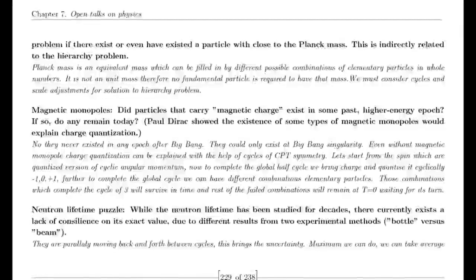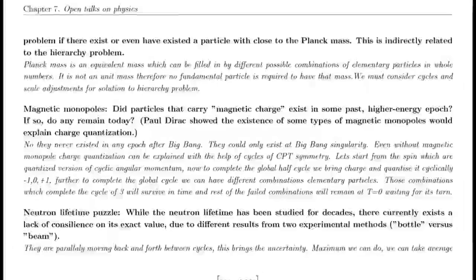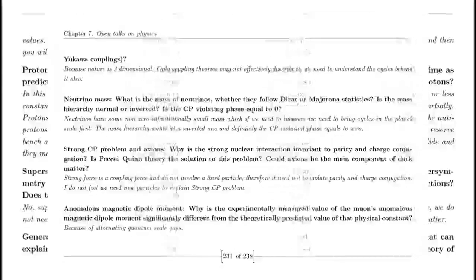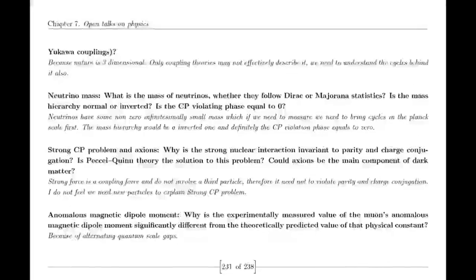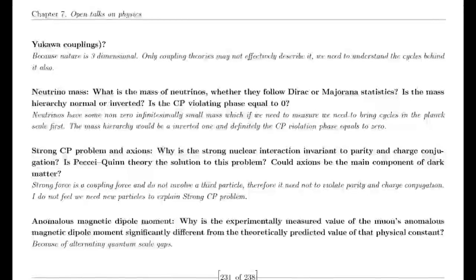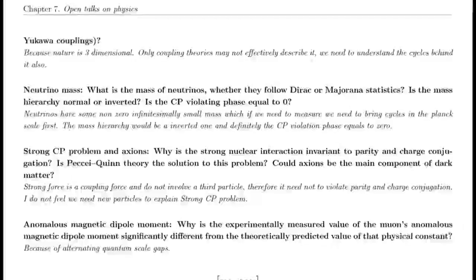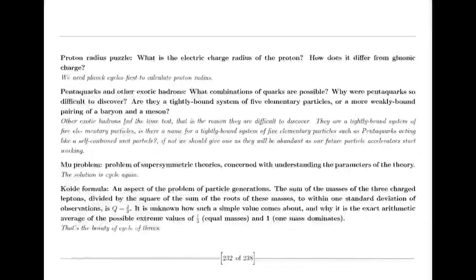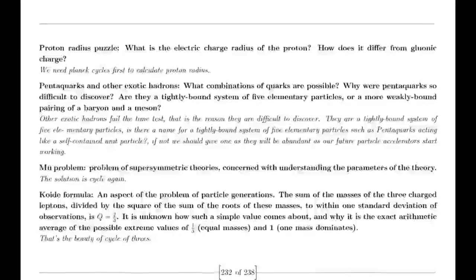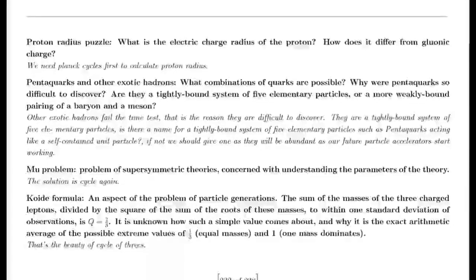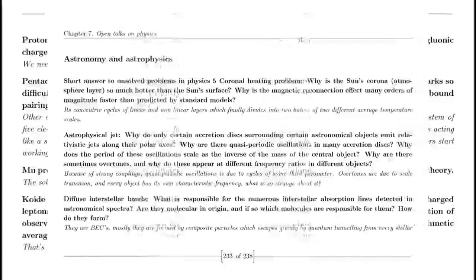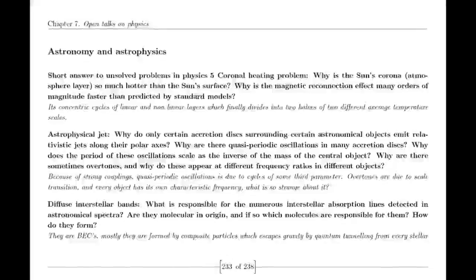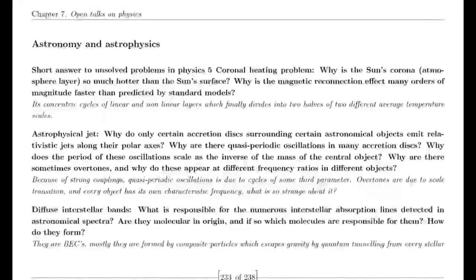This result implies that no matter how many axioms we add to our mathematical framework, there will always be some truths that elude formal proof. Given this, one might question whether mathematics can ever be made complete — Gödel's work suggests the answer is no. However, this does not mean our mathematical efforts are futile. On the contrary, adding new axioms can significantly enrich mathematics, allowing us to explore and understand more complex structures. The pursuit of new axioms is a crucial aspect of mathematical progress.